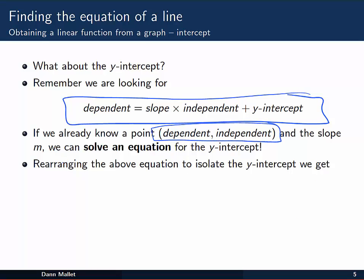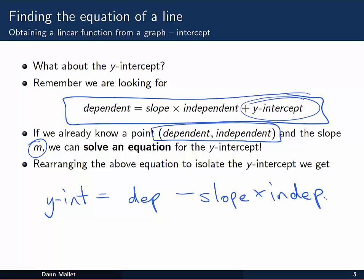And we know the slope m, so we can go ahead and solve the equation, just rearranging this one for y-intercept. So if we rearrange that equation to get y-intercept, we can subtract slope by independent from both sides, and get y-intercept is equal to dependent minus slope times independent. And that essentially tells us what the y-intercept will be.